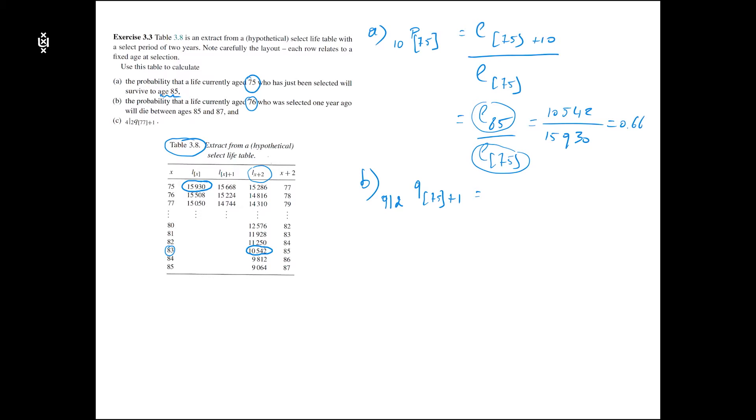This probability can be calculated as follows: you take first how many people died between 85 and 87. Because it's a select life table with select period of two years, I can write L85 minus L87.